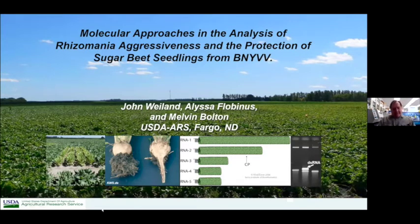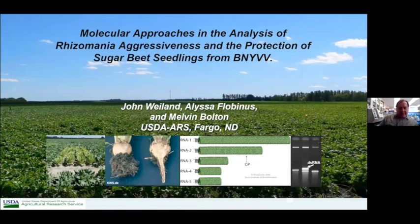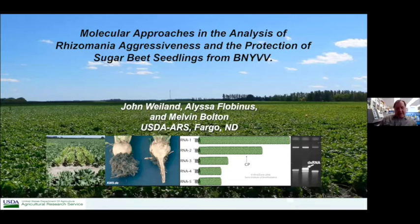Rhizomania gets its name from the symptoms: essentially, it translates to 'crazy root.' Instead of getting a nice smooth taproot that is high in sugar and yield, you get this proliferation of side roots and root hairs that compromise the beet. Inside that hairy root mass, if you do a cross section, you will see a high amount of necrosis that prevents accumulation of sugar and yield. This disease is quite severe and concerning. Although there is some genetic resistance used in the crop to control Rhizomania, there are concerns about the durability of some of that resistance and its effectiveness.